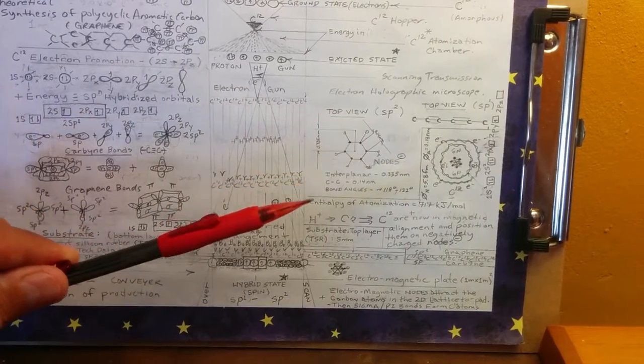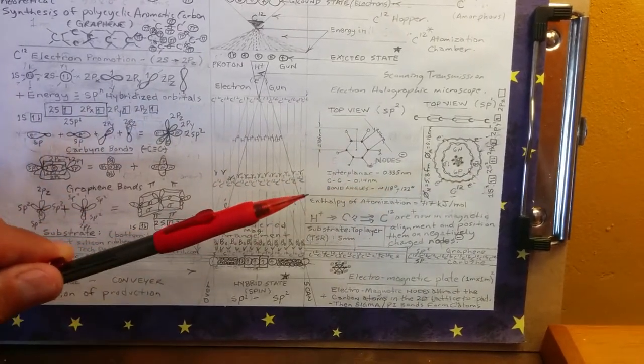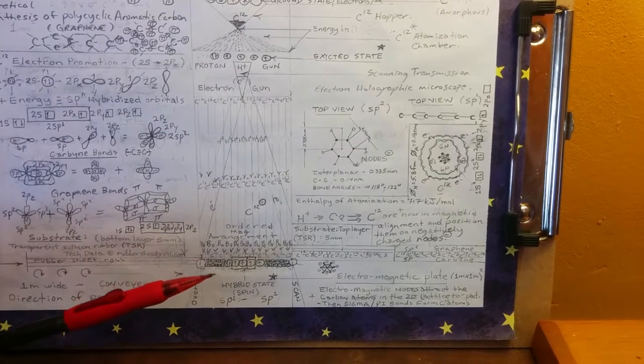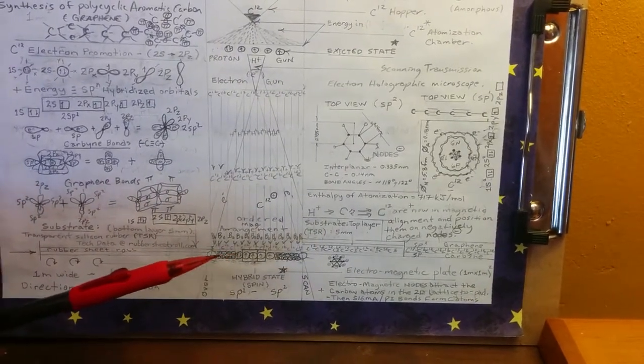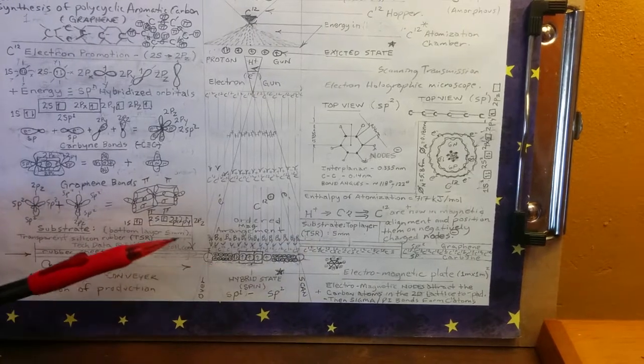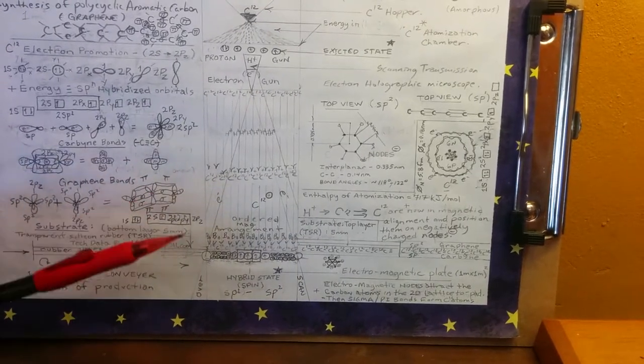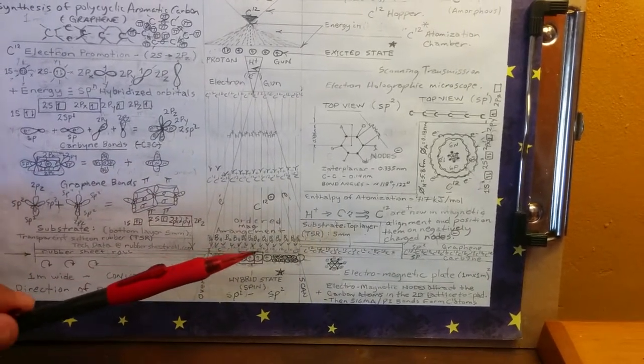Our bonding angles and chiral angles are there. And then we're in a hybridized state, and the carbon atoms can form the pi-sigma-pi bonds. Once they're formed, they're in graphene.